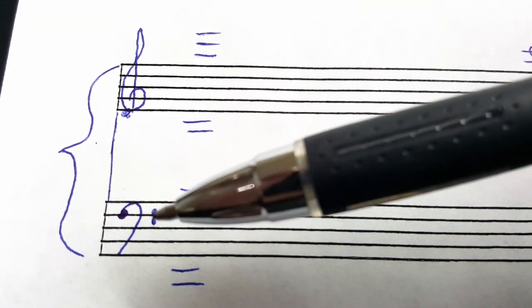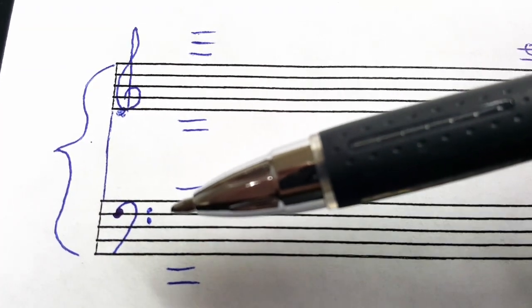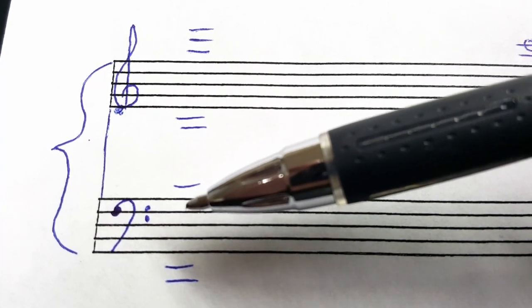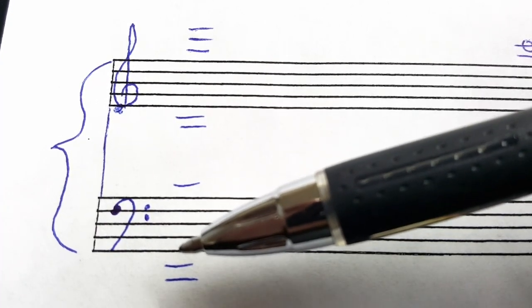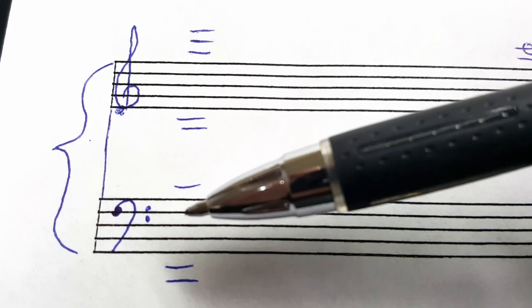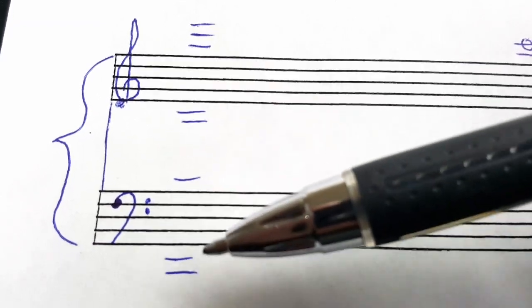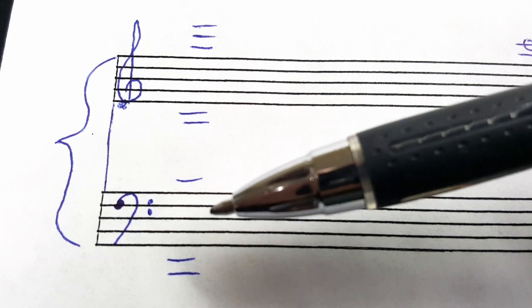For bass clef, this is also known as the F clef, and the fourth line is named F. And we have Good Boys Do Fine Always, and the spaces are All Cows Eat Grass.